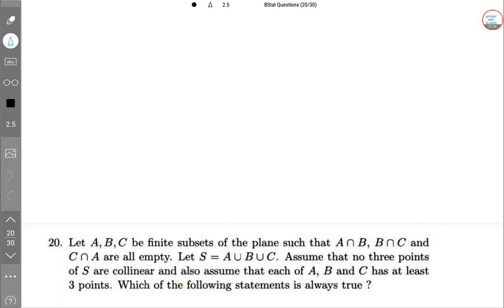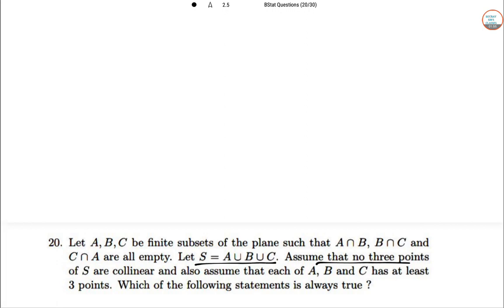Now this is about subsets and planes. Let's have a look at the question. Given that A, B, C are finite subsets and S = A∪B∪C. Assume that no three points of S are collinear and assume that each of A, B, C has at least 3 points.